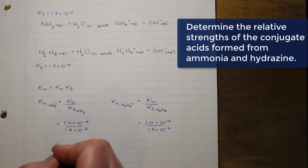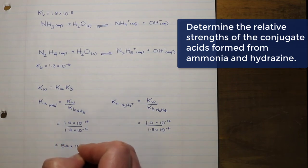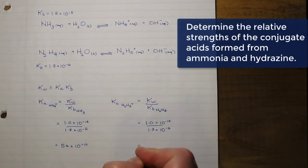In doing so, we're going to get a value for the Ka of the NH4 plus ion is 5.6 times 10 to the negative 10, and the Ka for the N2H5 plus ion is 7.7 times 10 to the negative 9. What we're going to notice is that this value for the N2H5 plus ion is greater than the value for the Ka of NH4 plus.